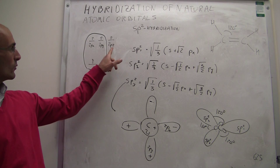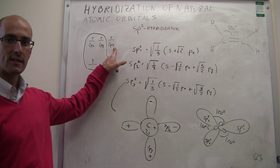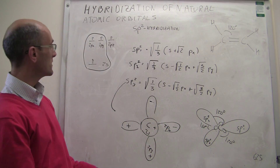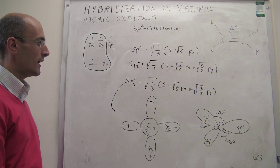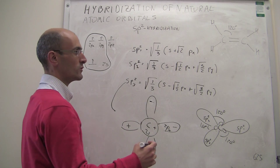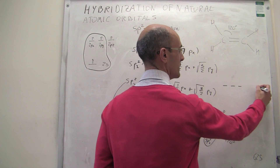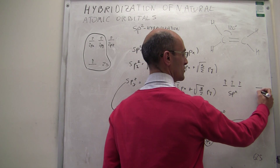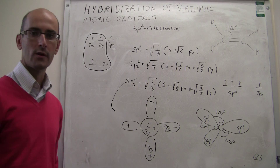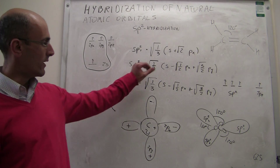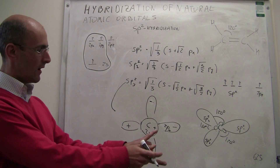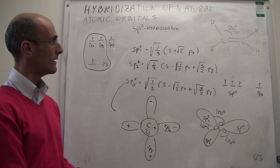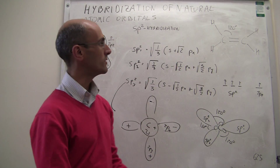What we can't forget is that we have not involved the 2pz orbital in this hybridization. The 2pz orbital is going to be coming in and out of the plane. Each one of the sp2 orbitals is going to have one electron, and the 2pz orbital is also going to have one electron. So the electronic configuration gives you three sp2 hybrid orbitals each with one electron, plus the unhybridized 2pz natural orbital that also has one electron.